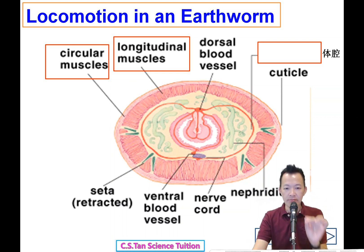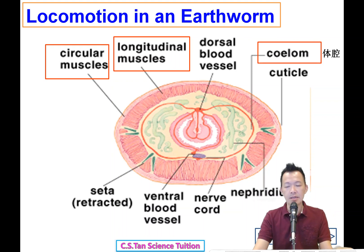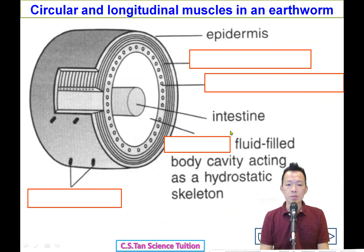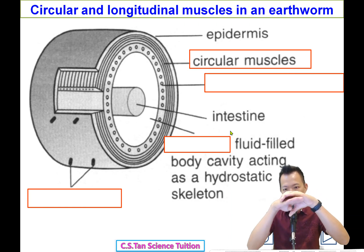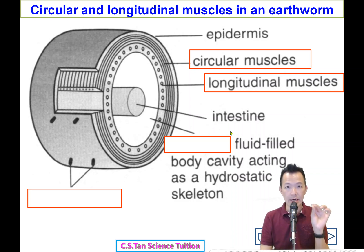Under the two layers of muscle there is a space inside the body, but it is not empty — it is filled with fluid. This fluid-filled space is called the coelom. So the earthworm has two layers of muscle — circular muscle and longitudinal muscle — and beneath them is the coelom, which contains fluid.